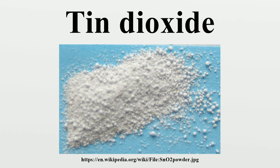Tin oxide for this use is sometimes called putty powder or jeweler's putty. SnO₂ coatings can be applied using chemical vapor deposition techniques that employ SnCl₄ or organotin compounds such as butyltin trichloride as the volatile agent. This technique is used to coat glass bottles with a thin layer of SnO₂, which helps to adhere a subsequent protective polymer coating such as polyethylene to the glass. Thicker layers doped with Sb or F ions are electrically conducting and used in electroluminescent devices.